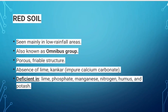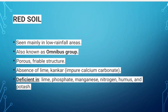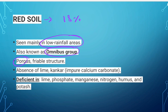Red soil covers 18 percent of India. It is mainly found in lower rainfall areas. The soil is also known as the omnibus group. Its structure is porous and friable. This soil is formed by the weathering of crystalline granite and metamorphic rocks.